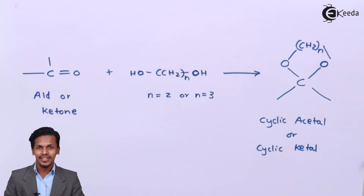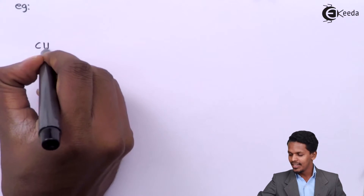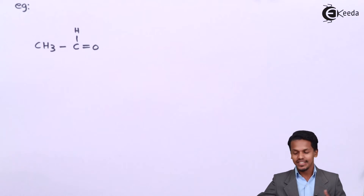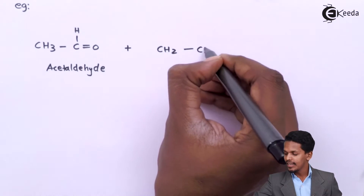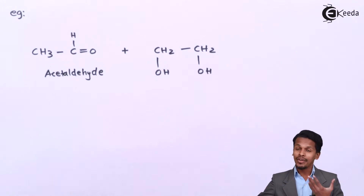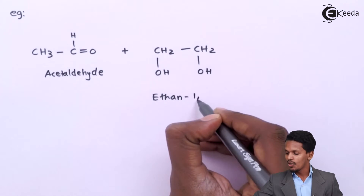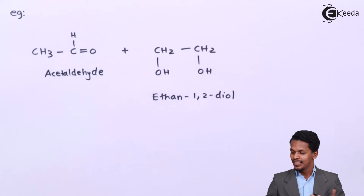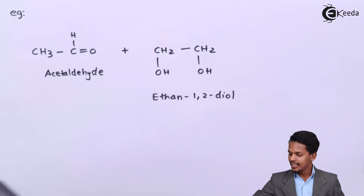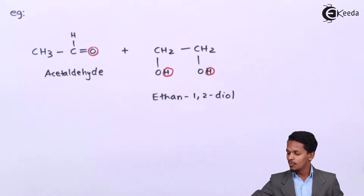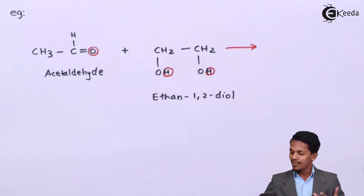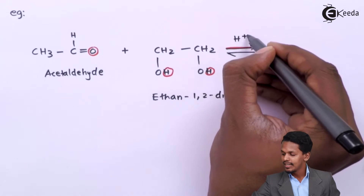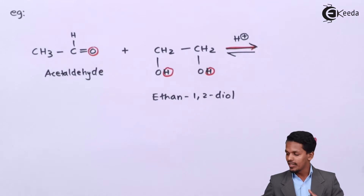Now let us look at an example. If acetaldehyde reacts with ethylene glycol — also called ethane-1,2-diol — the reaction proceeds such that one hydrogen from each OH group along with the carbonyl oxygen is removed as water, H2O, as a byproduct. This reaction is reversible and proceeds in an acidic medium.